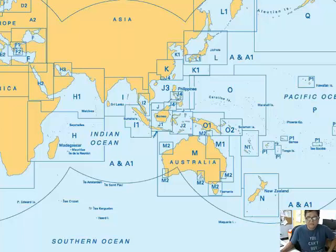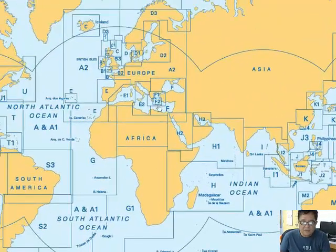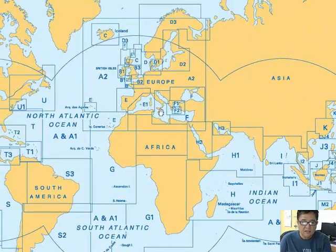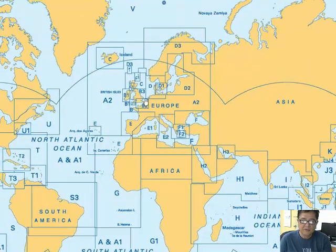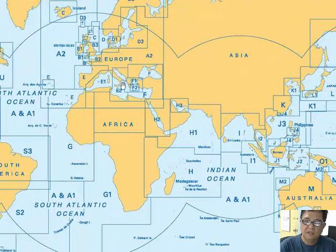If you are in the Mediterranean, it's E1 and E2. If you are in the English Channel, it is B1 and B2. It's just a representation of the limits of the chart.